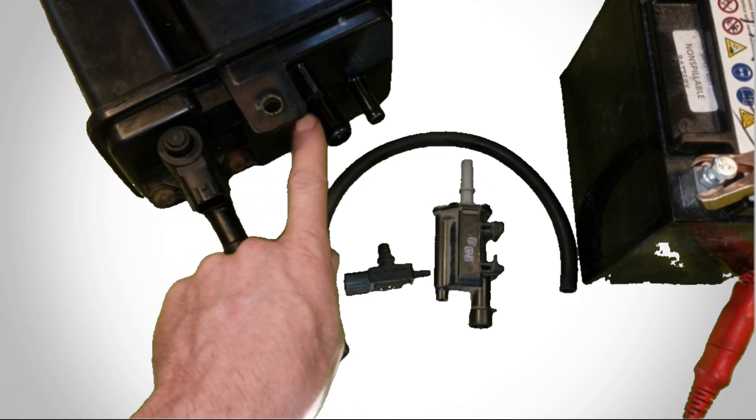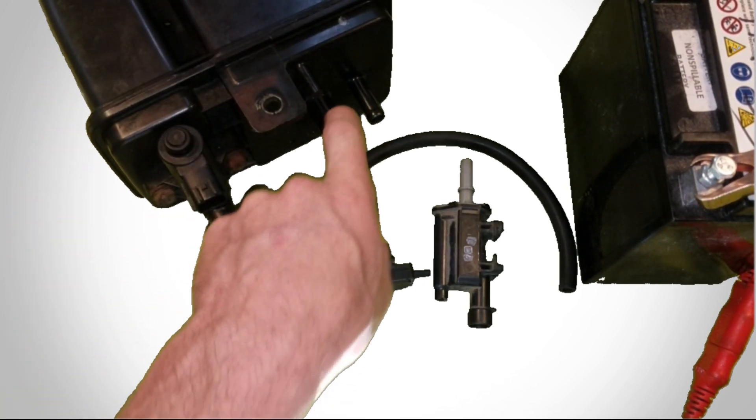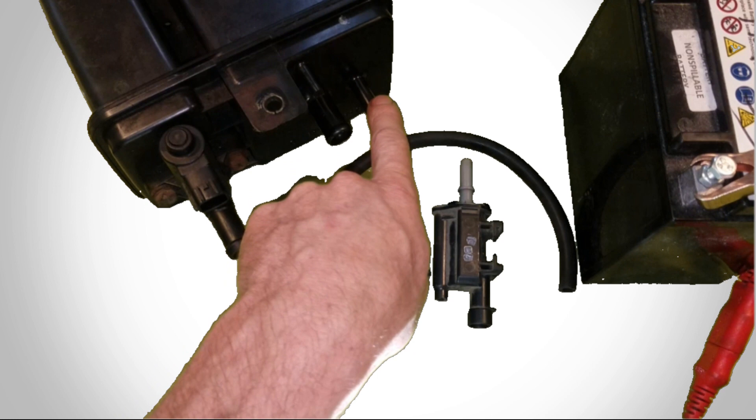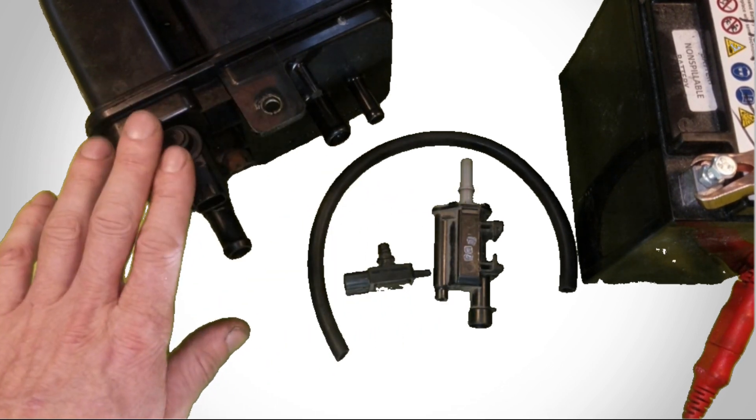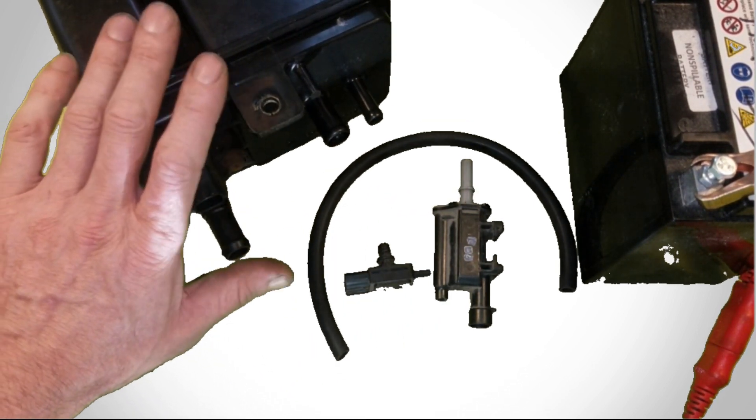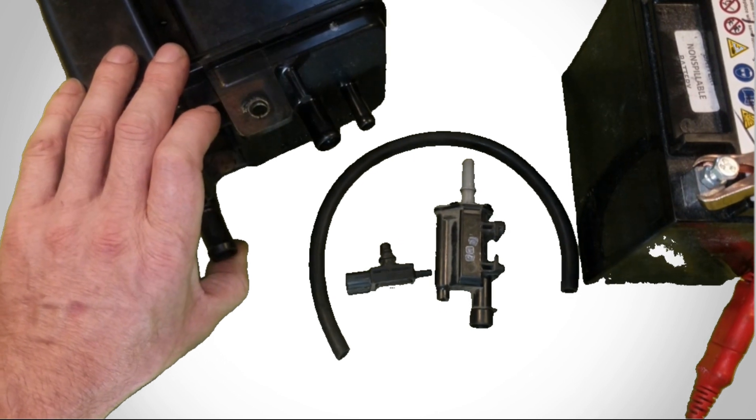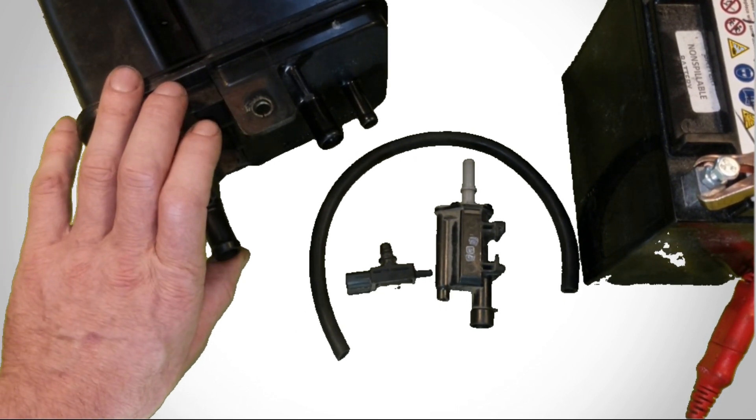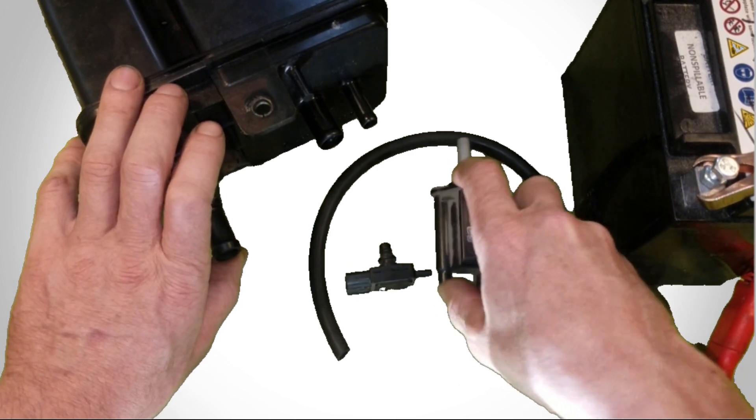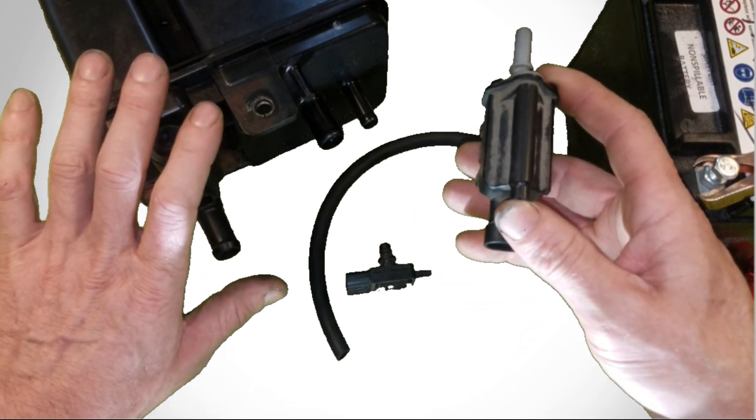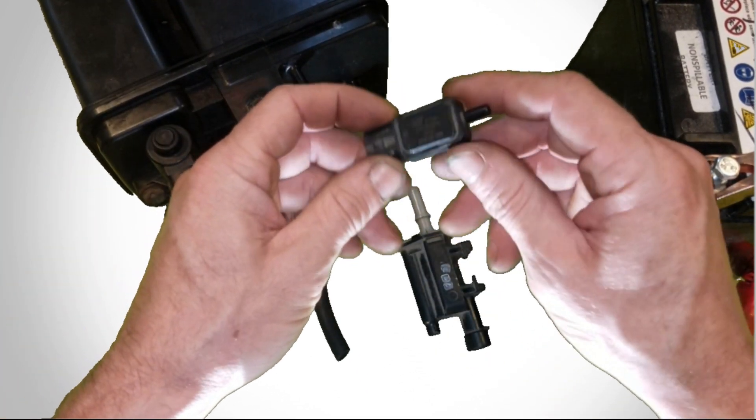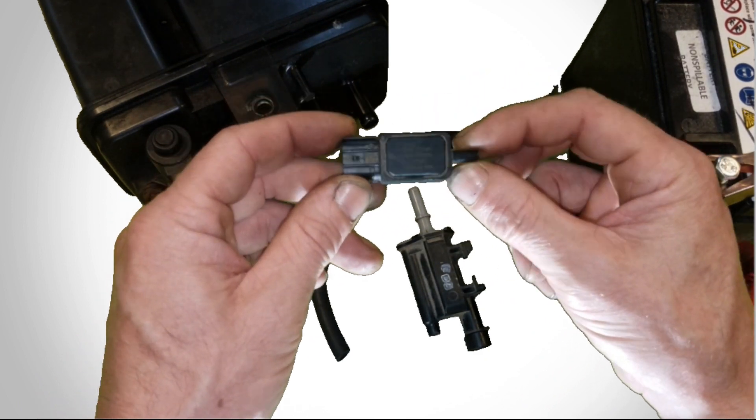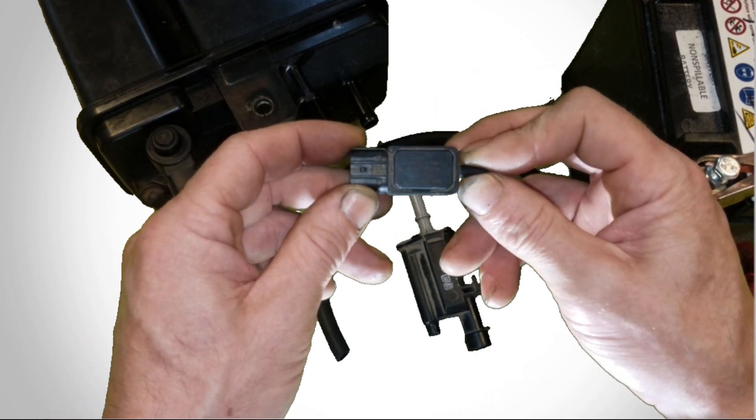So basically it's just taking vapors from your tank here and it's purging them out this other fitting here. All this vent valve is doing is this is for testing. So when it's testing for leaks, it's going to shut this vent valve and it's going to purge for a minute, pull a vacuum, then it's going to hold it and the fuel tank pressure sensor is going to monitor that pressure. If it drops, that's when it's going to set a leak code.